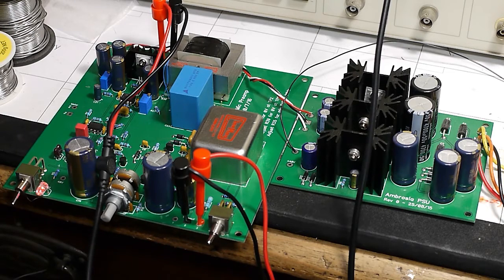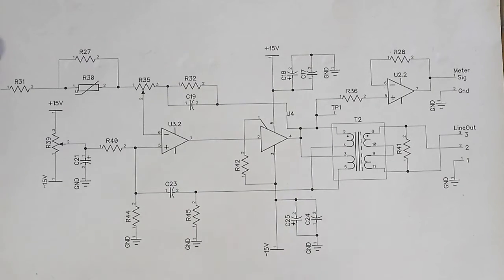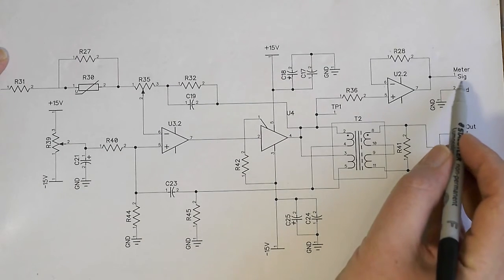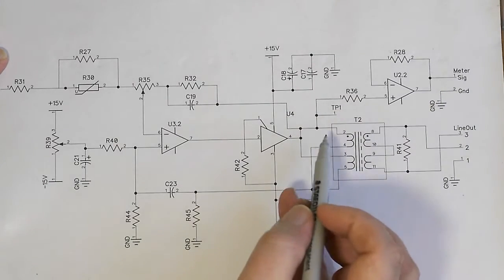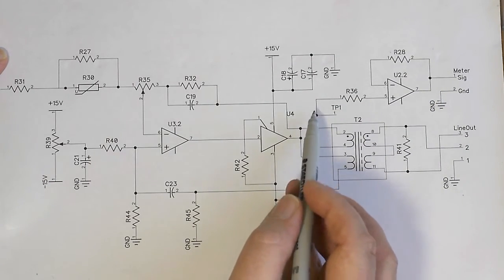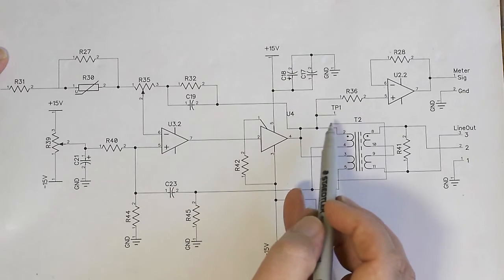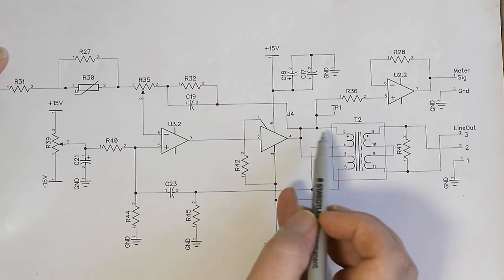So let's get to it. Okay, so here's the output stage of the mic preamp. Our first round of testing, we were just taking the signal from the meter output here, which as you can see, just actually is a buffered output from the output transformer primary.